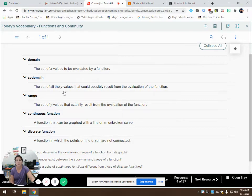So the codomain is the set of all the y values that could possibly result from the evaluation of the function. And the range is the set that actually does happen, is what we actually do get when we evaluate the function.